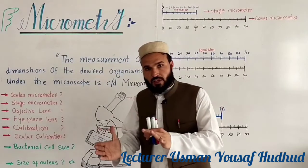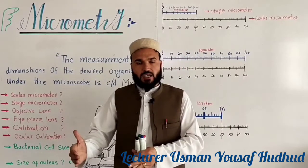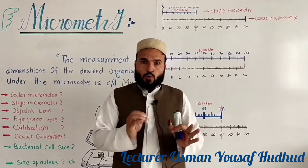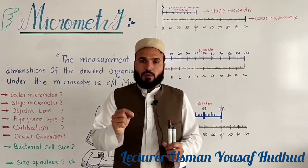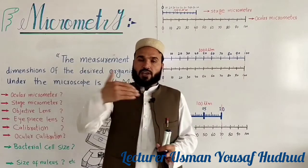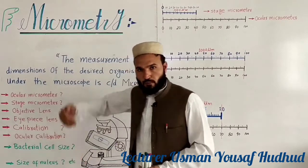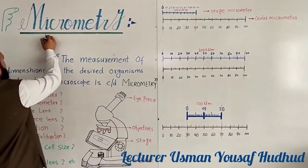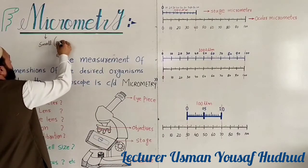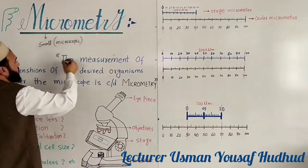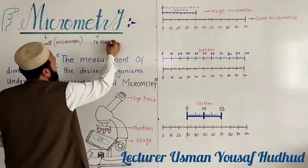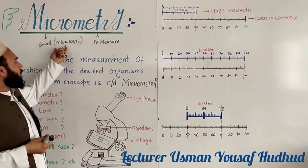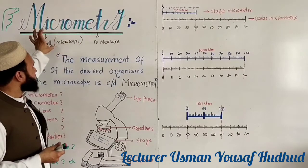This technique is used in biology. We use it to tell the real size and dimensions of microscopic organelles. The real size and dimensions of microscopic organelles or microscopic organisms can be recorded and measured with the help of this technique — micrometry. 'Micro' means small, and 'metric' means to measure. So simply, measurement of microscopic objects or organisms is known as micrometry.